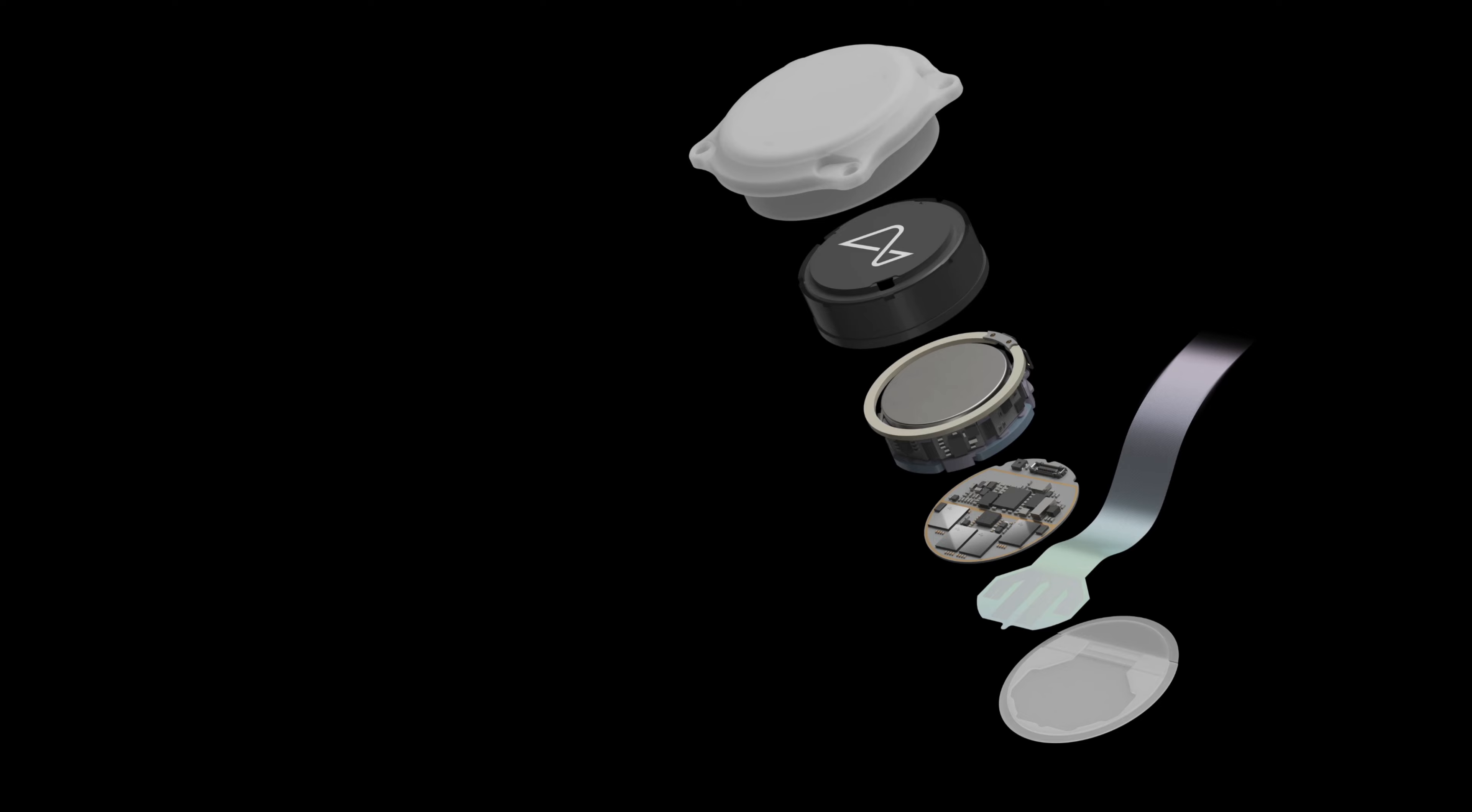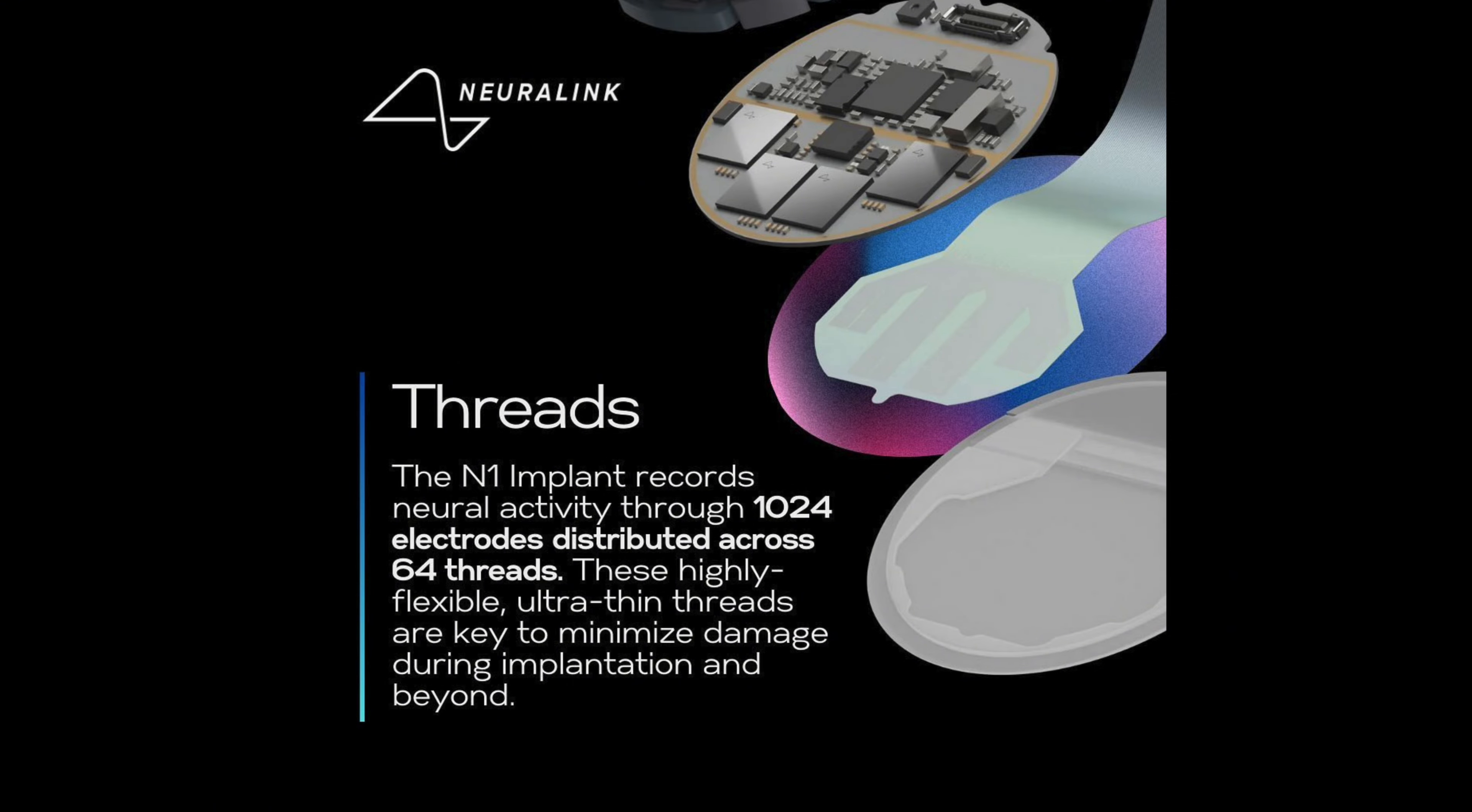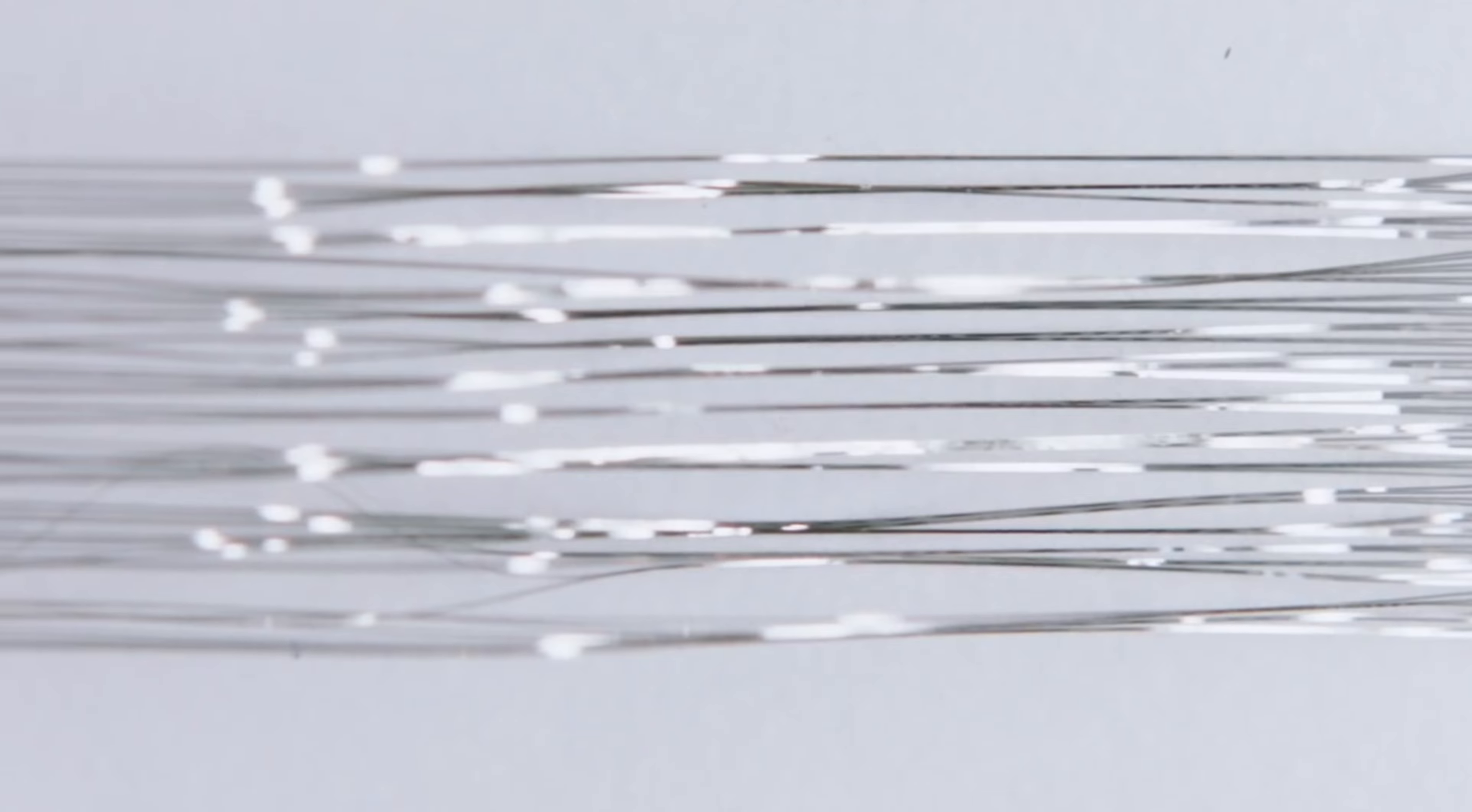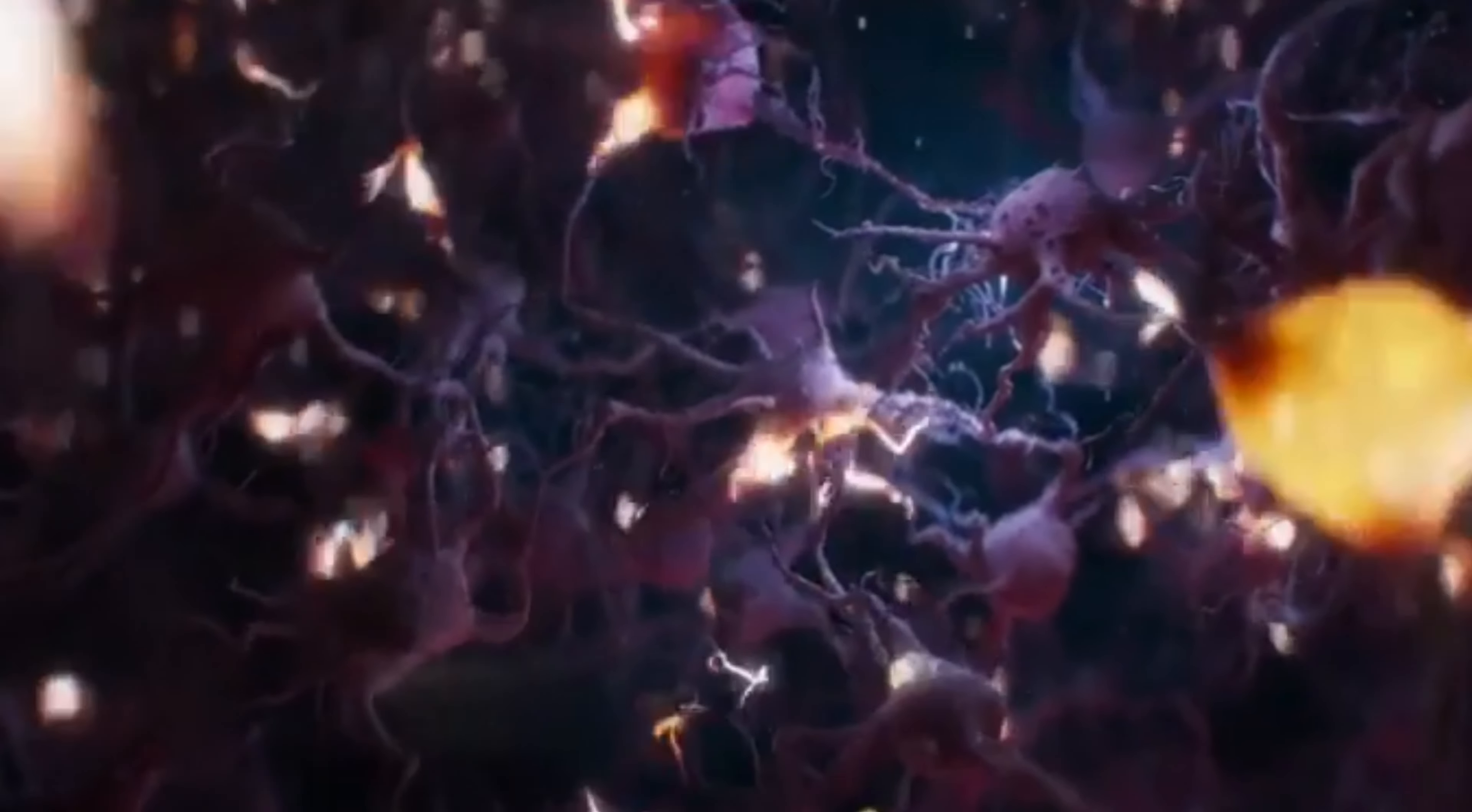Neuralink's device is at the forefront of technology thanks largely to its incredibly thin threads, each one finer than a human hair. These threads are a blend of advanced materials primarily composed of polyamide, a biocompatible substance which houses gold traces that conduct signals.